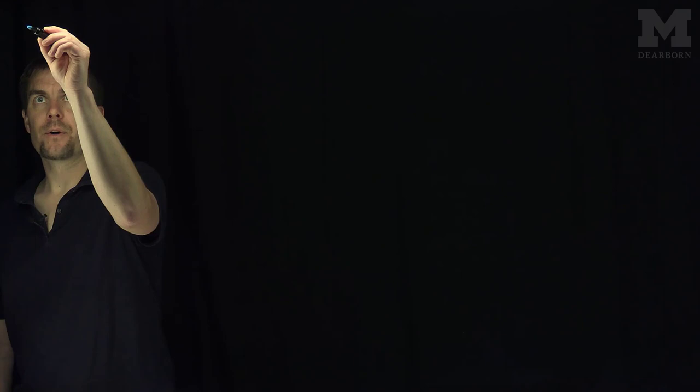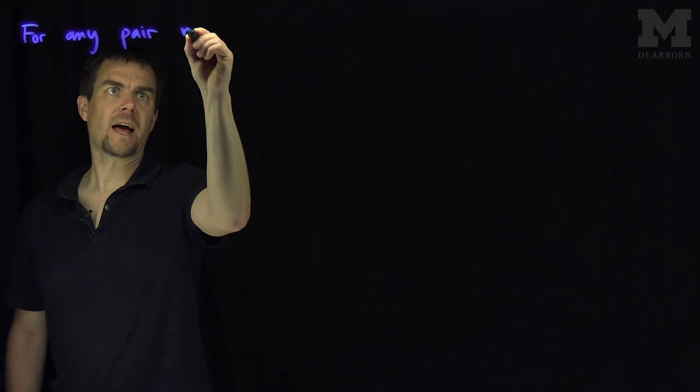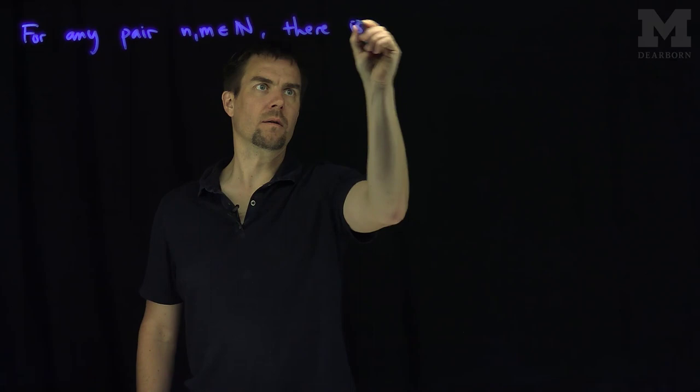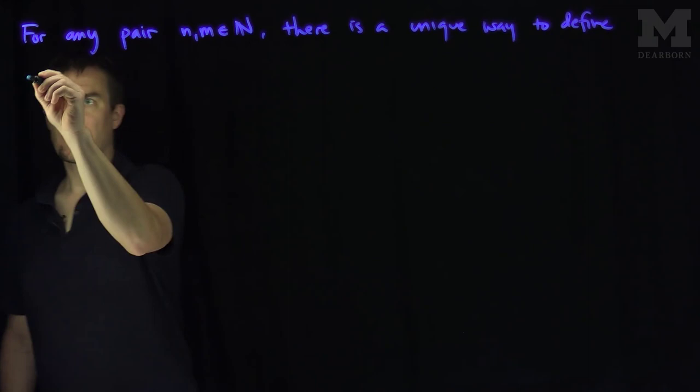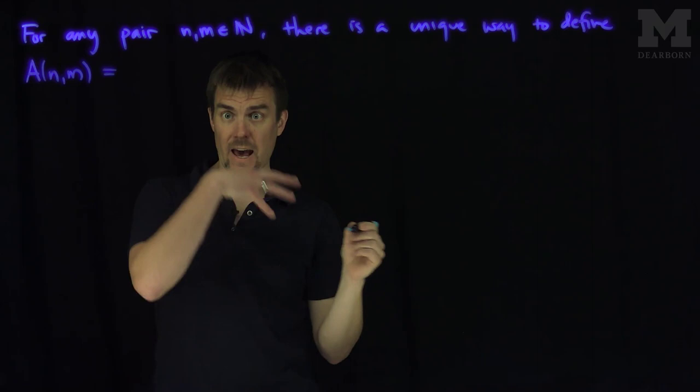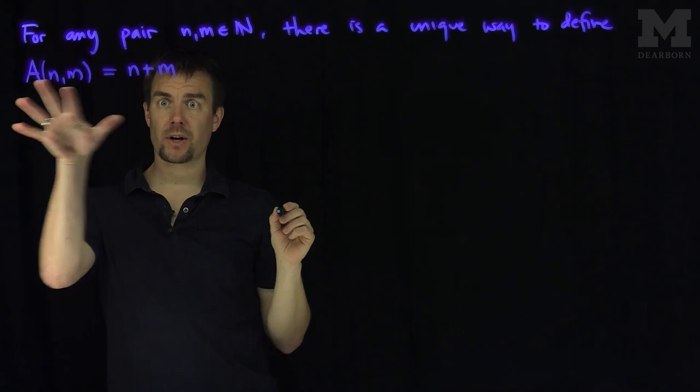Our theorem is going to state the following. For any pair n and m in N, there is a unique way to define an operation A(n,m), which we're going to write in two ways: as A(n,m) and also as n plus m. So these two expressions are identical to each other.